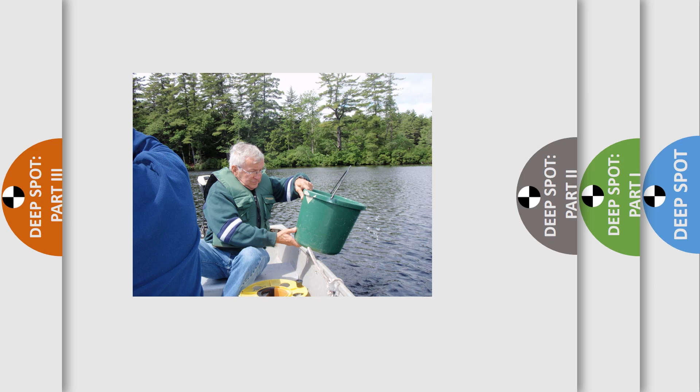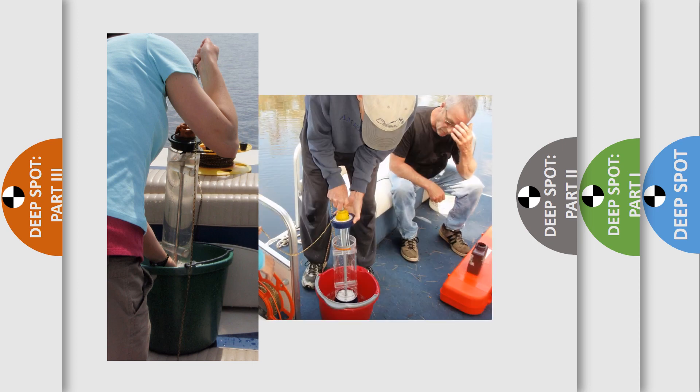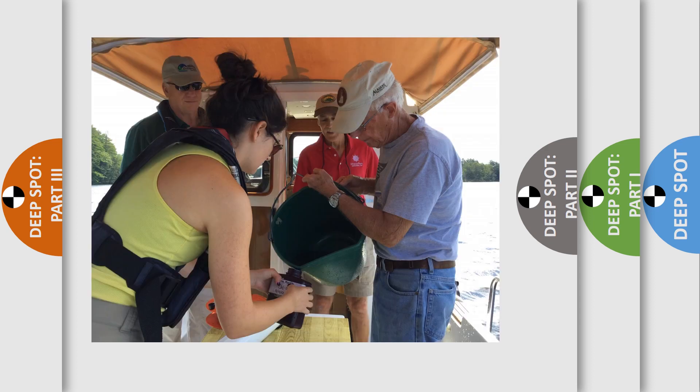Make sure you use a clean bucket. Rinse your bucket with lake water and discard. Lower the Kemmerer bottle to the appropriate depths and close the bottle. Empty the water from the Kemmerer bottle into the bucket from each meter to the surface. If not using a full Kemmerer bottle of water from each depth, make sure you use the same volume of water from each depth. Take your large brown bottle, rinse with water from the bucket and discard, then fill the brown bottle from the bucket and put it in the cooler.